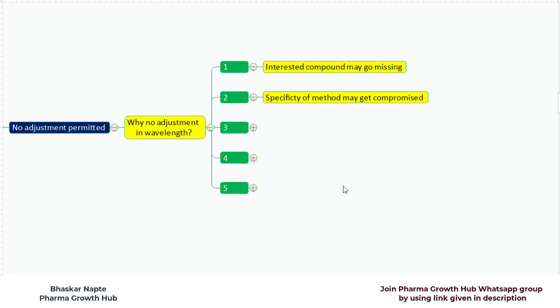But if you decide to change the wavelength, and if that changed wavelength brings interference from the matrix or brings interference from the diluent, your specificity of method will immediately get compromised. There can be interferences coming at the retention time of your analytes, and hence the change in the detection wavelength is not permitted by USP General Chapter 621.